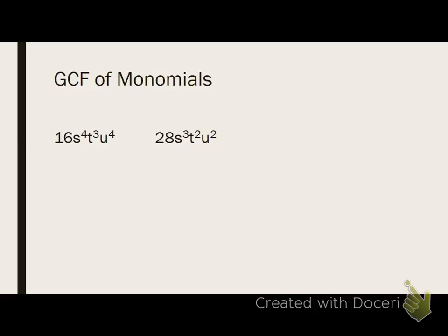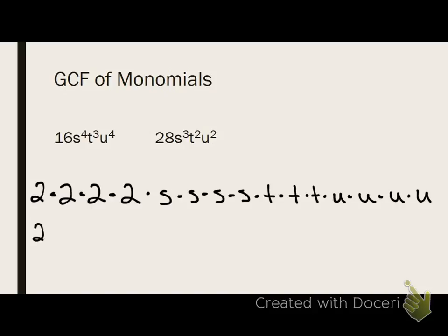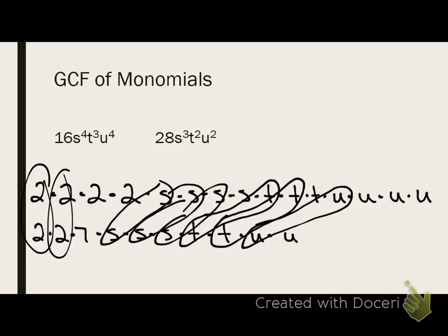All right, now switching over to monomials, I want you to find the GCF of these two monomials. All right, in the expanded form, we just break down the prime factorization. All right, now this is a lot. All right, I'll be the first to admit we group them. Okay, and we have four, and then how many groups of S's? Three, how many groups of T's? Two, how many groups of U's?